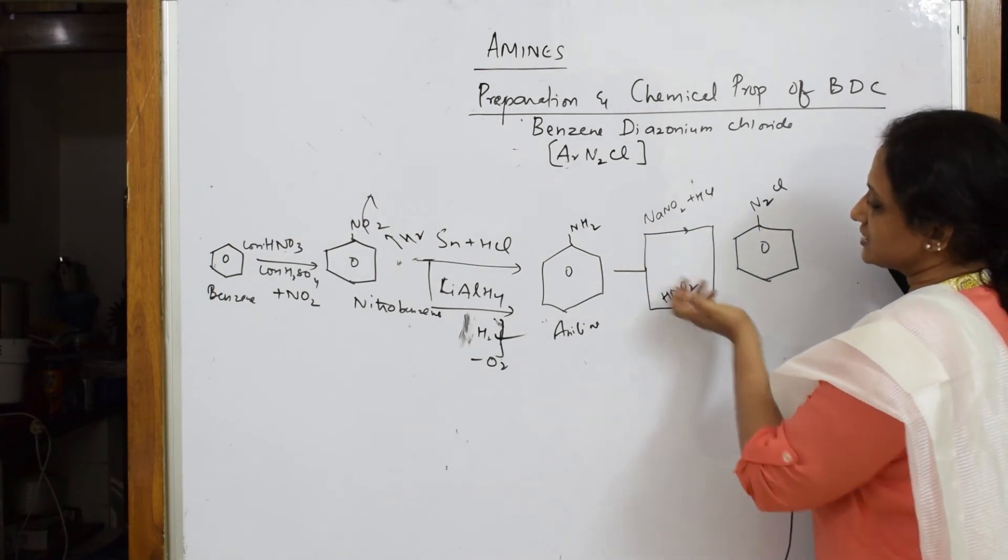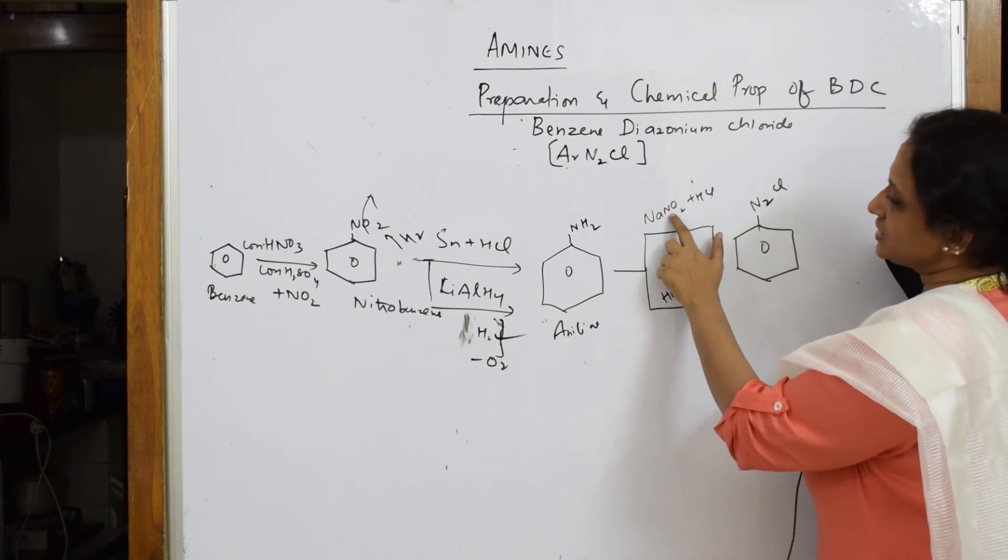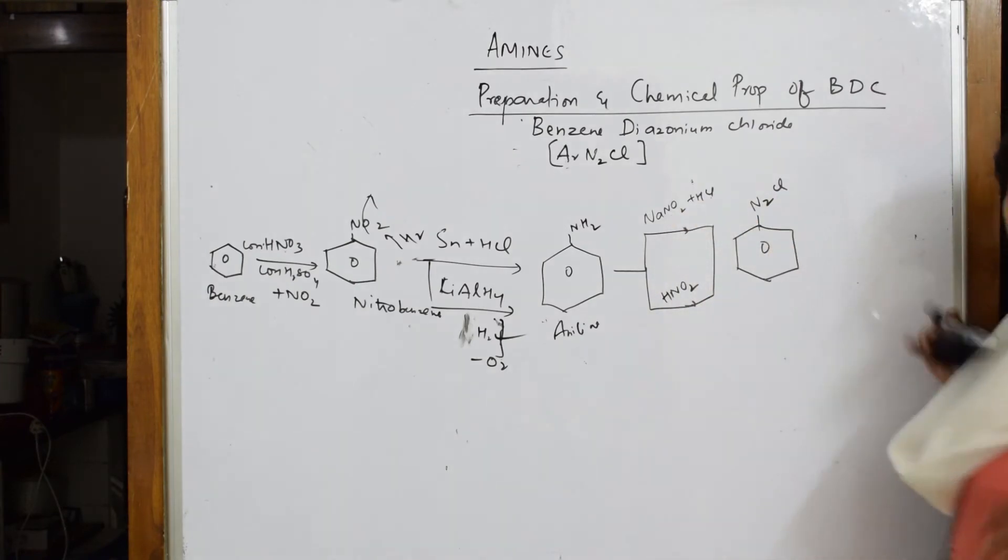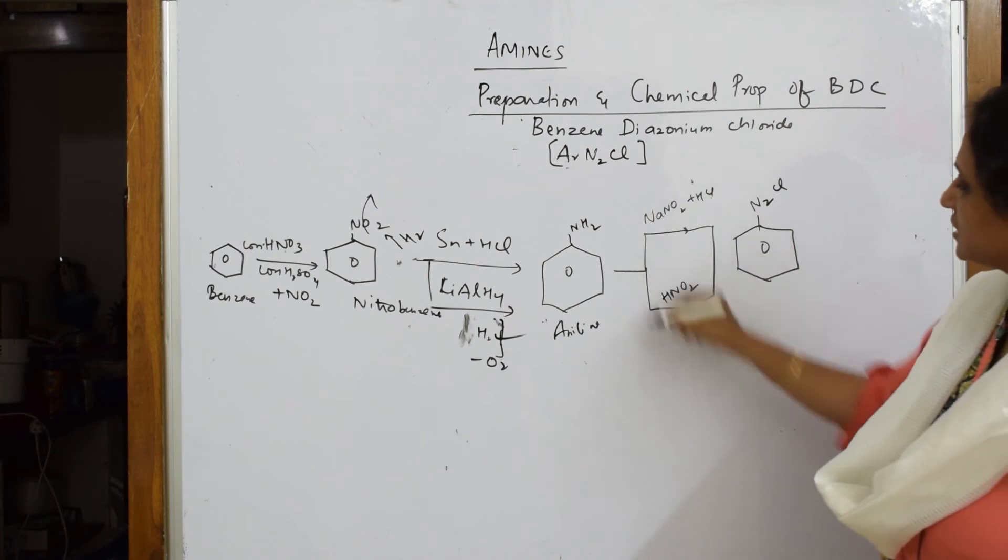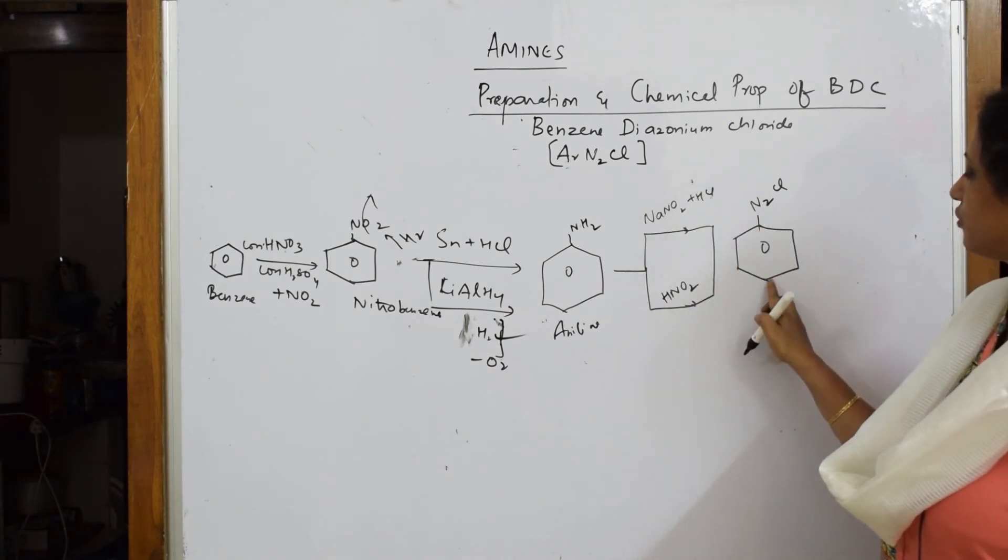This N2 and Cl - N2Cl. So when you see these two, that means they want you to form BDC. So BDC benzene diazonium chloride - to this BDC, observe carefully one, two, three conditions.